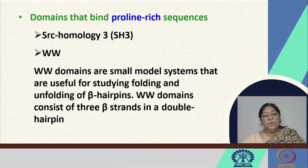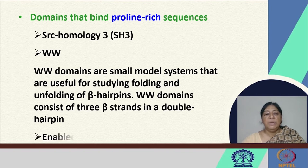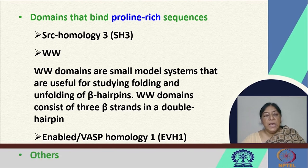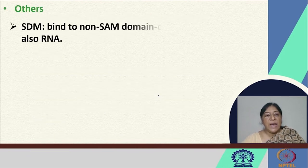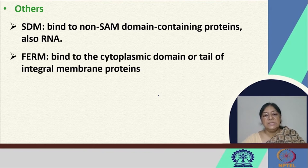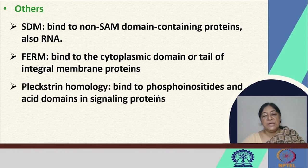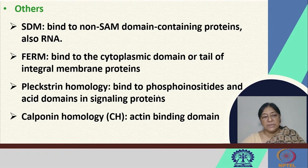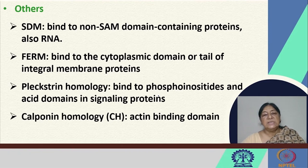WW domains are small model systems useful for studying folding and unfolding of beta hairpins, and they consist of three beta strands in a double hairpin. There are also other domain types: the SAM domain, which binds to non-SAM domain-containing proteins and also RNA; the FERM type that binds to the cytoplasmic domain; the pleckstrin homology (PH) type that binds to phosphoinositides, acid domains and signaling proteins; and the CH type, a calponin homology actin binding type. What we need to recognize is that there is specific recognition involved in these protein-protein interactions for the specificity and high affinity associated with the specific biological action of each of these domains.